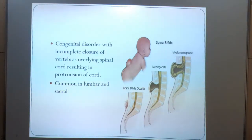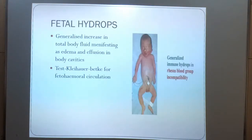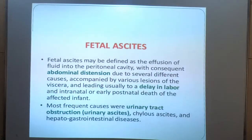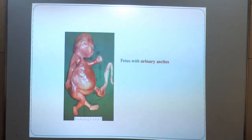This is commonly seen in the lumbar and sacral region, and there may be myelomeningocele or spina bifida occulta. This is fetal hydrops — a generalized increase in body fluid manifesting as edema and effusion in body cavities. Fetal ascites may be defined as effusion of fluid into the peritoneal cavity with abdominal distension. The most frequent causes are urinary tract obstruction — that is urinary ascites — chylous ascites, and hepato-gastrointestinal disease. This is a fetus with urinary ascites.